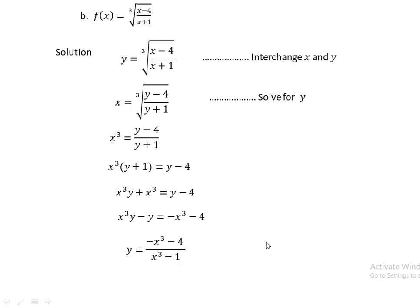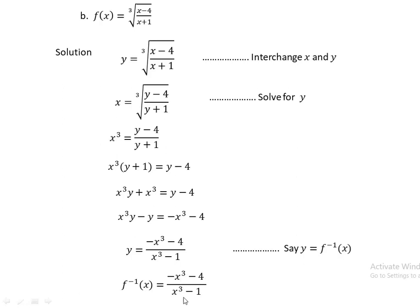Writing y as f inverse of x, we have f⁻¹(x) = (-x³ - 4)/(x³ - 1). This is the inverse of f(x) = cube root of (x - 4)/(x + 1). To verify, check that f(f⁻¹(x)) = x or f⁻¹(f(x)) = x.